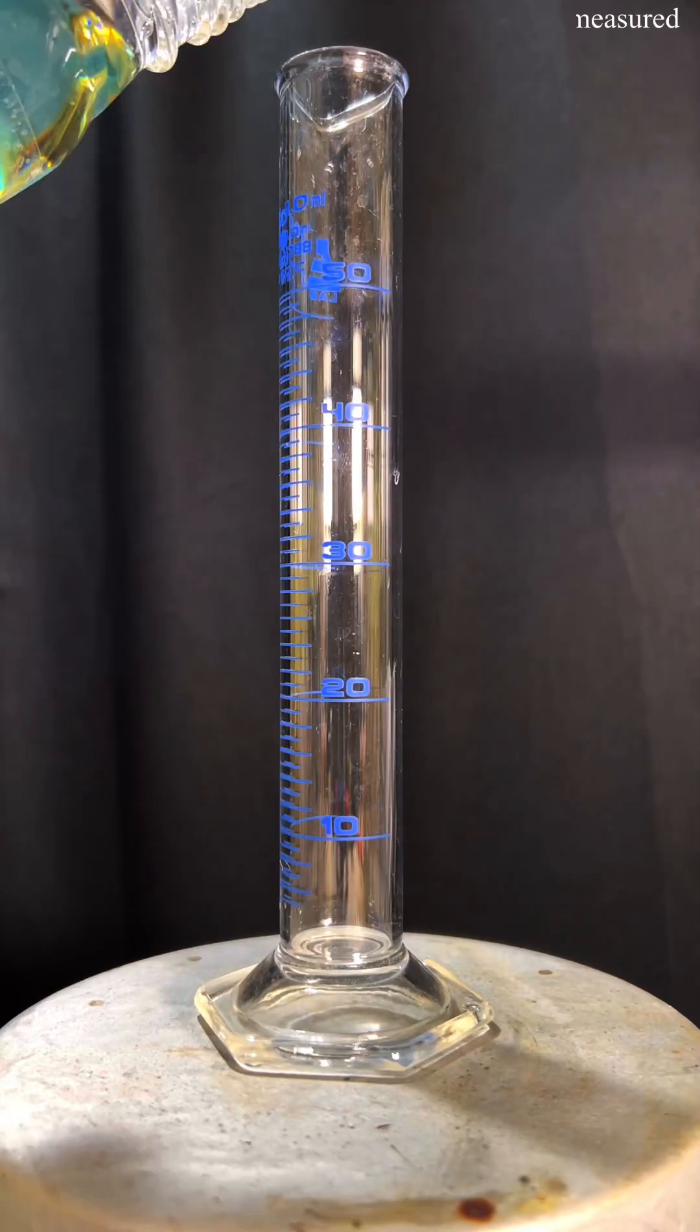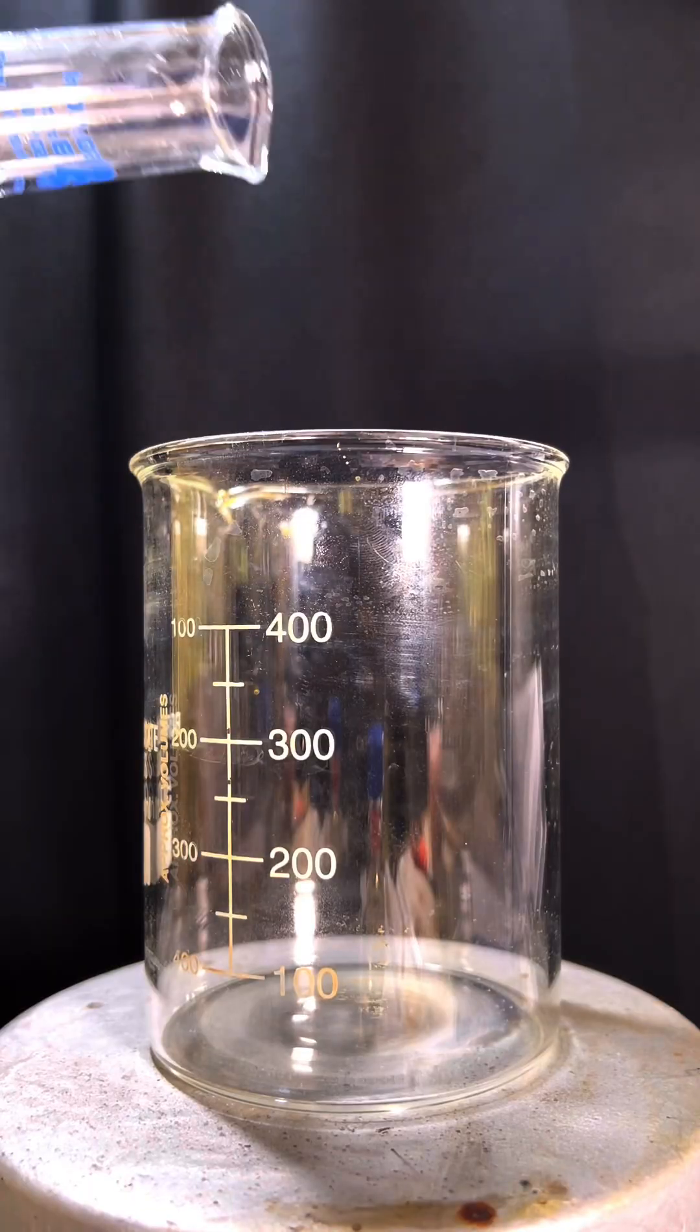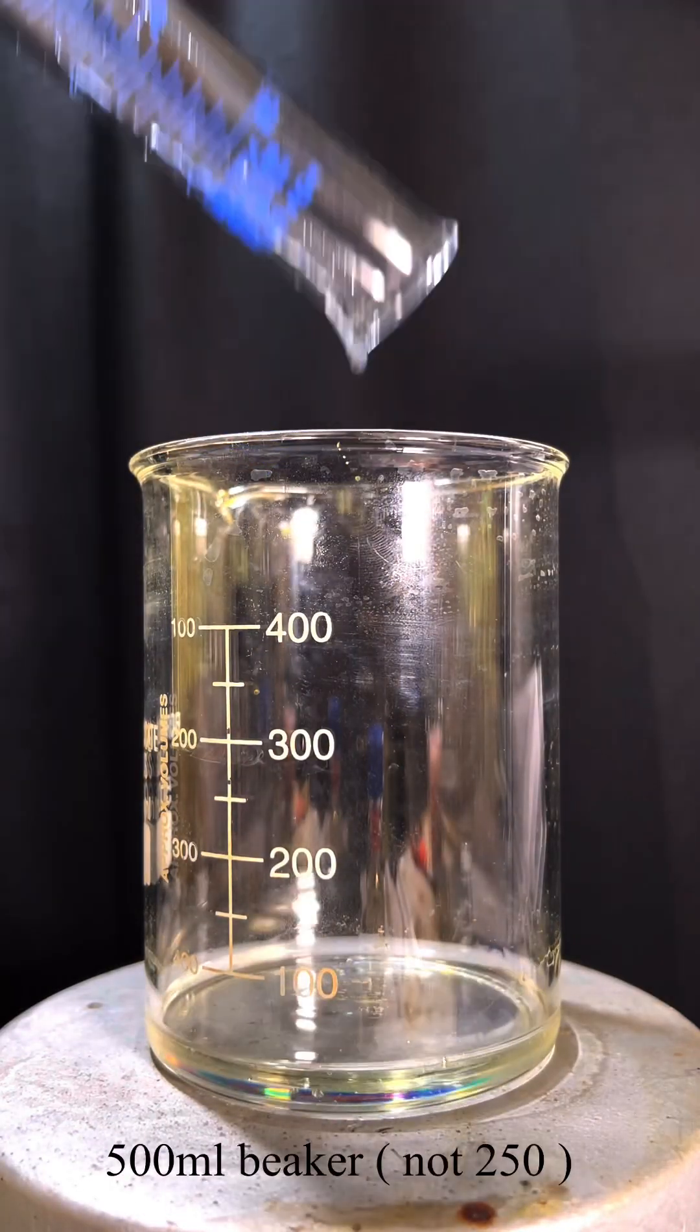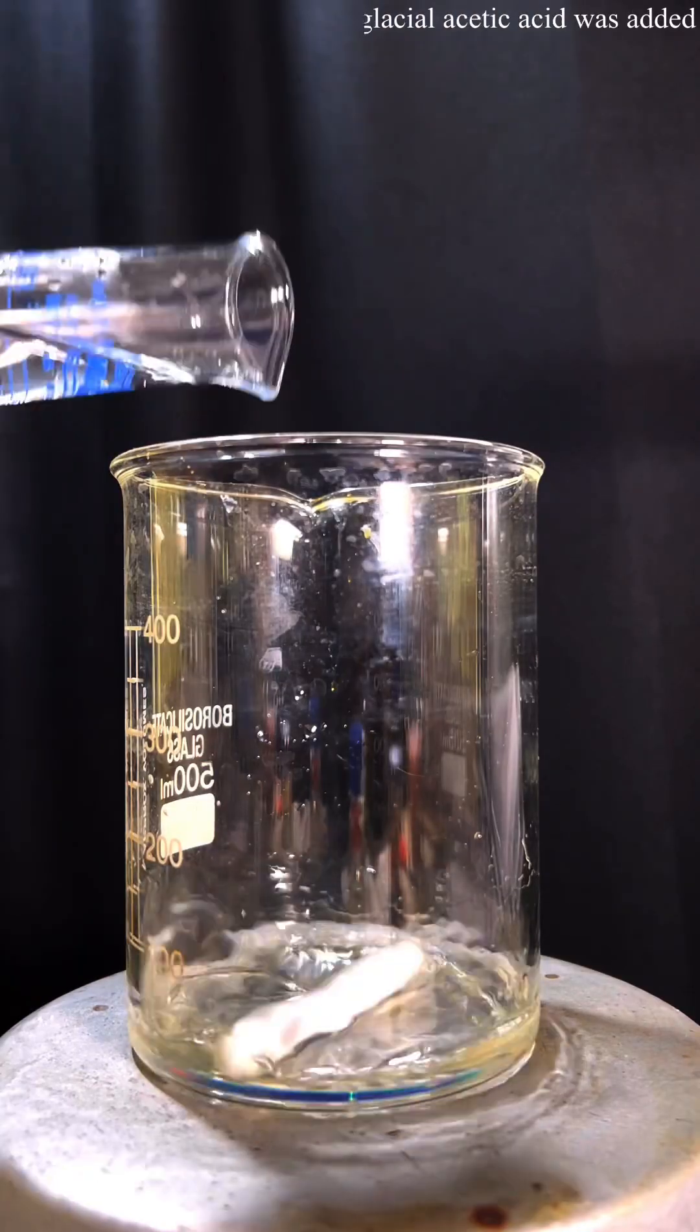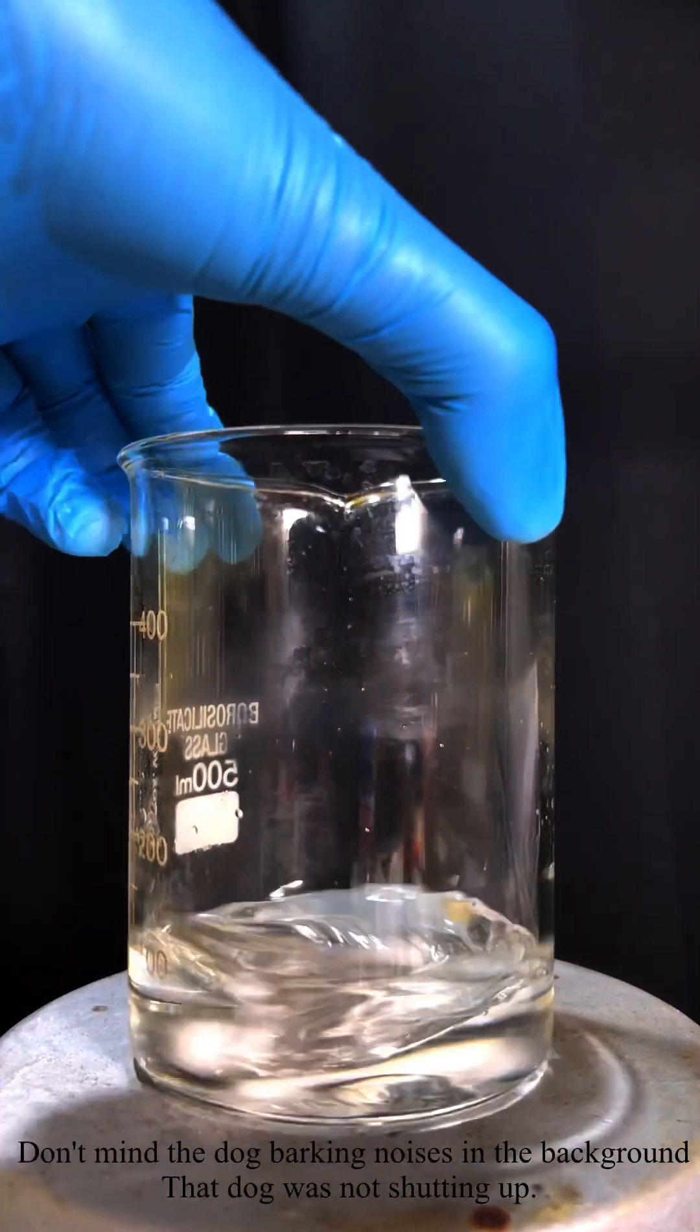For the synthesis of tri-bromoaniline, 15 ml of aniline was measured out in a graduated cylinder and transferred to a 250 ml beaker. With the stirring turned on, 50 ml of glacial acetic acid was added to aniline.